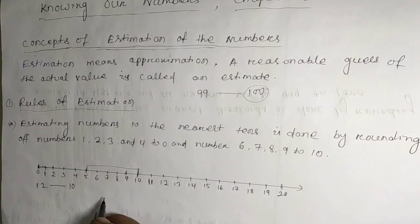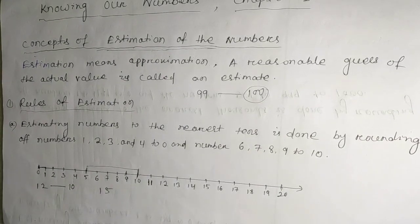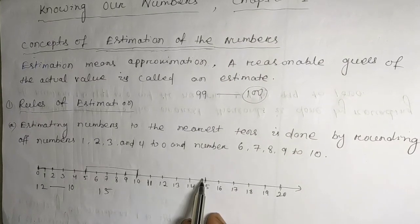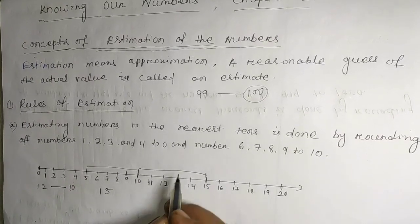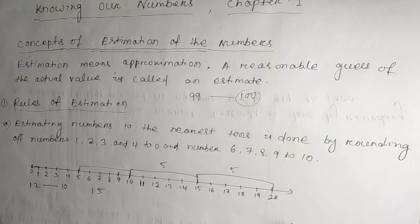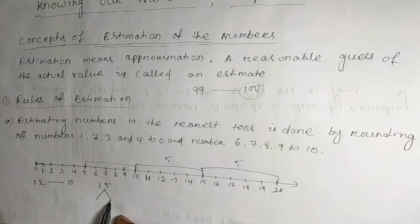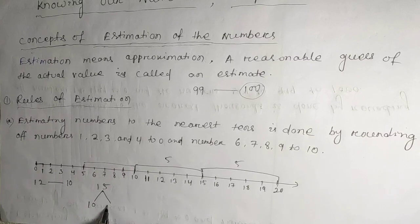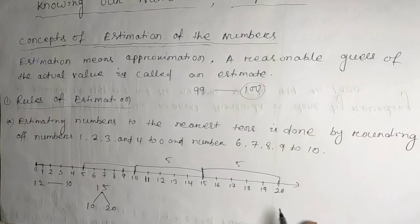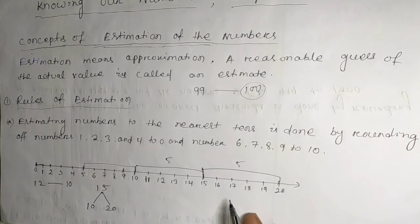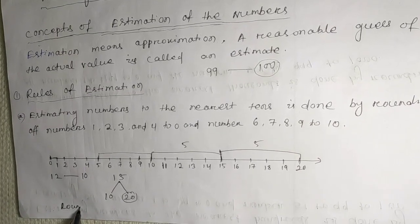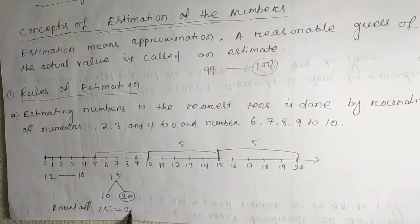Suppose example 15. The difference from 10 to 15 is 5, and from 15 to 20 is also 5. So 15 comes exactly in the center between 10 and 20. Since it is at the center, we take 20. So round off of 15 is 20.